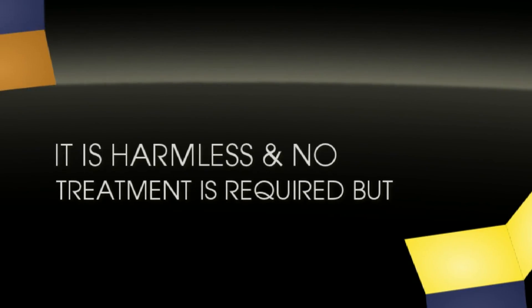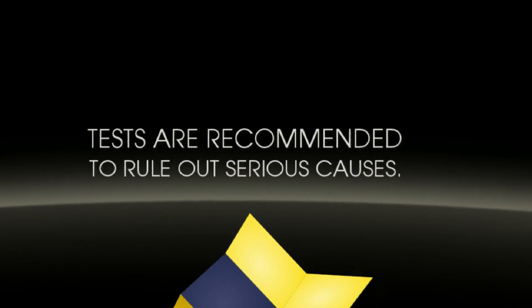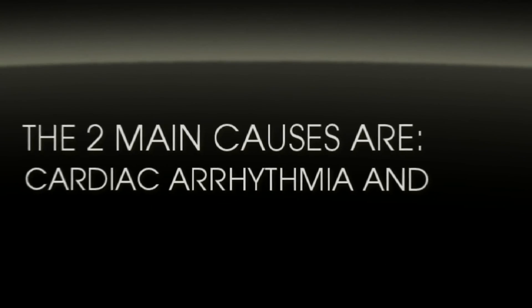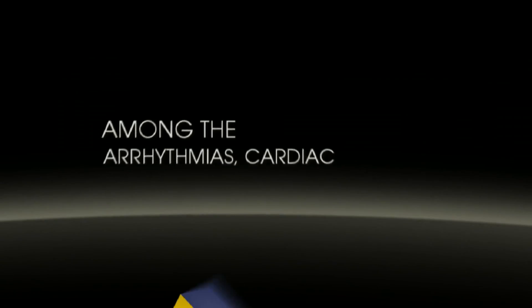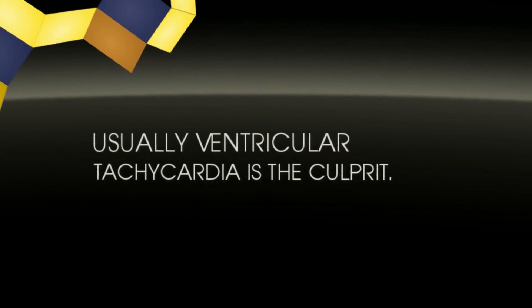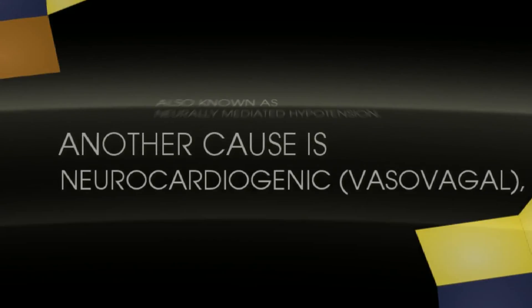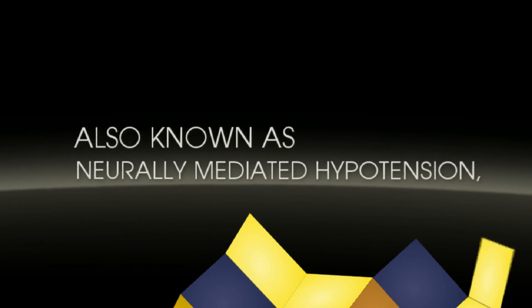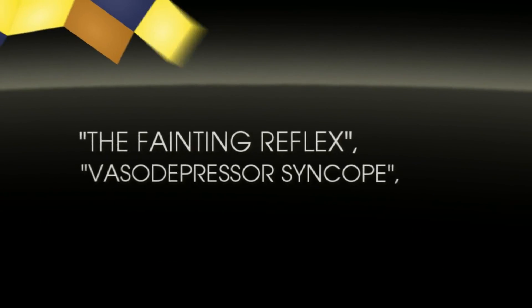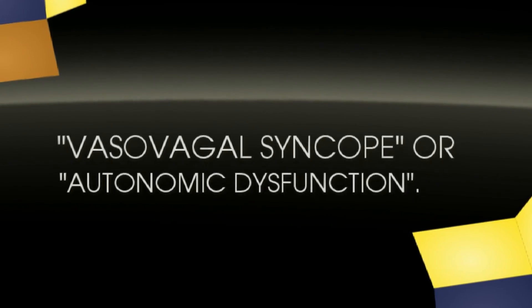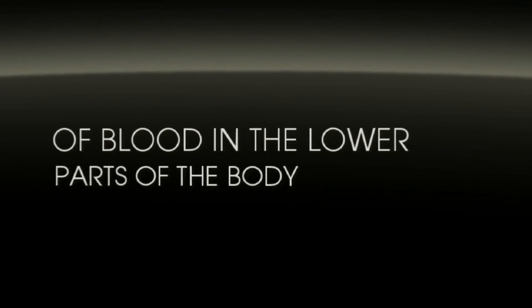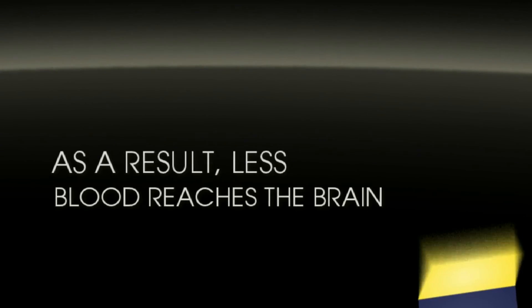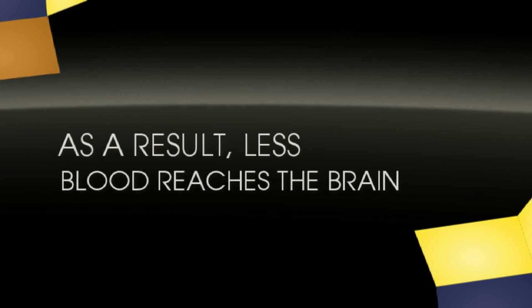The two main causes are cardiac arrhythmia and neurocardiogenic syncope. Among arrhythmias, ventricular tachycardia is usually the culprit. Another cause is neurocardiogenic syncope, also known as neurally mediated hypotension, the fainting reflex, vasodepressor syncope, or autonomic dysfunction. In this condition, the blood vessels expand, leading to pooling of blood in the lower parts of the body.